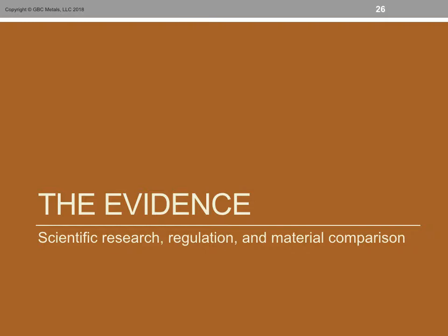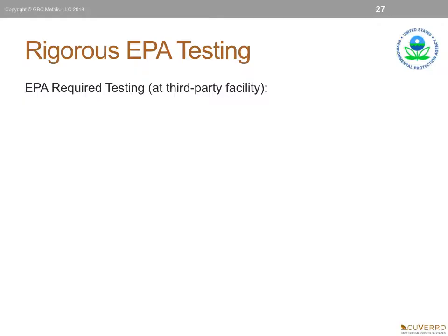Now let's review the evidence. Rigorous EPA testing was conducted on copper alloys at a third-party facility. Three tests were conducted: first, an efficacy test; second, a wear test; and third, a repeated contamination test — on six bacteria.